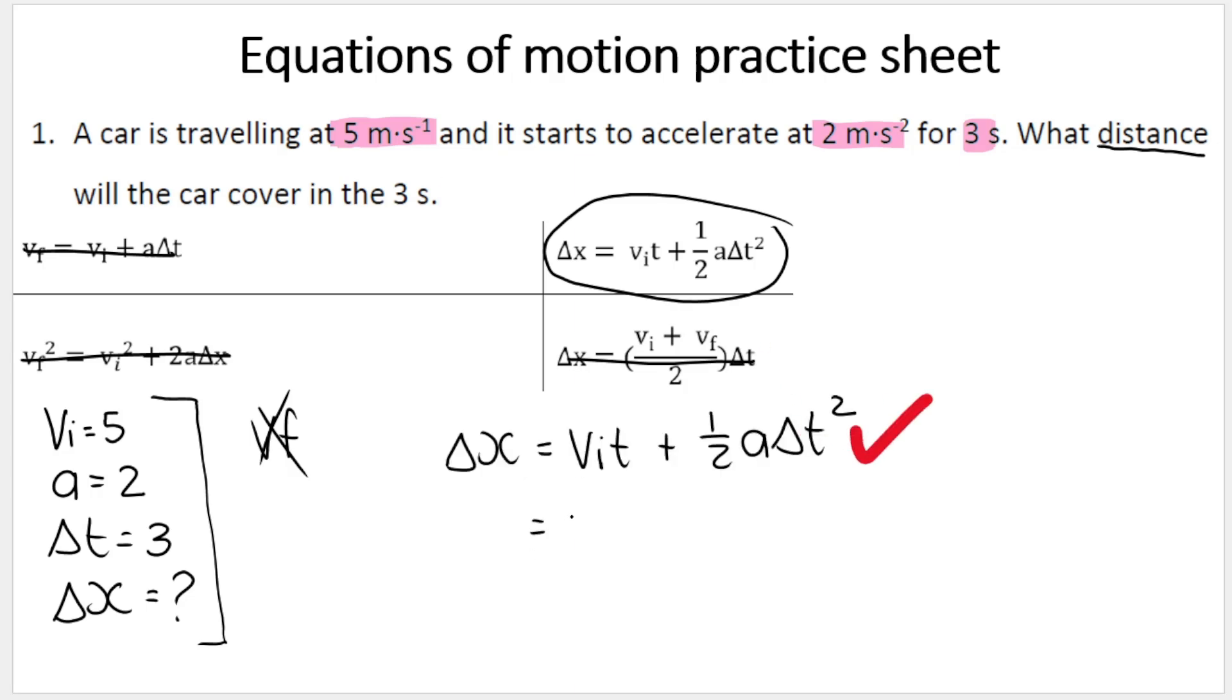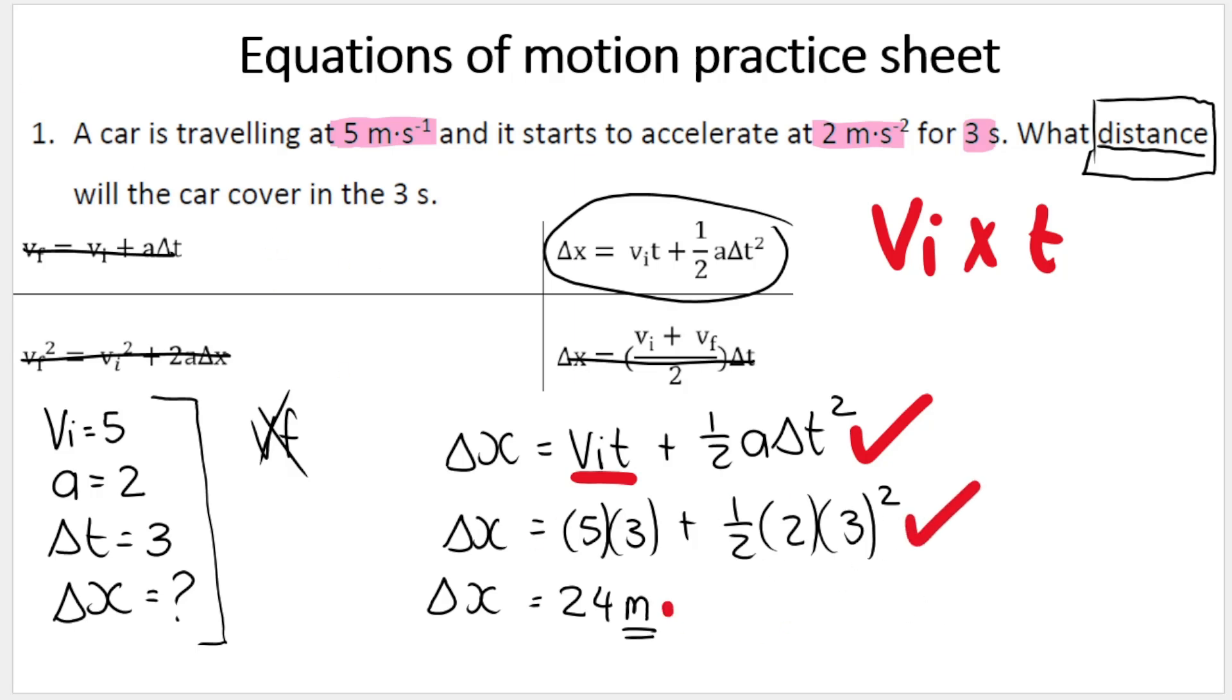So write down your blank formula first. Writing that down gets you a mark. Then you substitute. So in the place of VI, I put 5, in the place of time, I put 3, plus half. In the place of acceleration A, I put 2, and again, in the place of time, I put 3. Don't forget to square it, because my formula says I must square time, and I'm looking for the displacement. Very important. These variables, VI and T, they are squashed up next to each other, which means we know that it's VI multiplied by T. You know, variables are squashed up next to each other in a formula, it means multiplication. Then I may use my calculator, and I get the distance to be 24 meters. Now because I want distance and not displacement, I just have to put a unit, I don't have to put a direction. So where do you get your marks? Formula, substitution, answer with units.